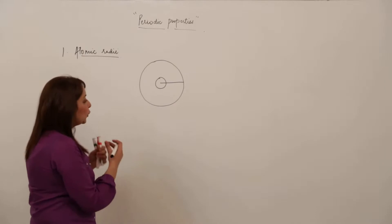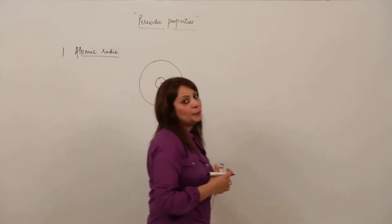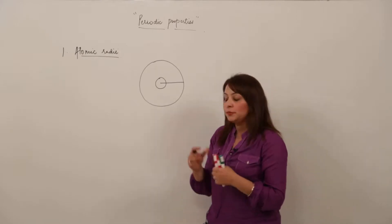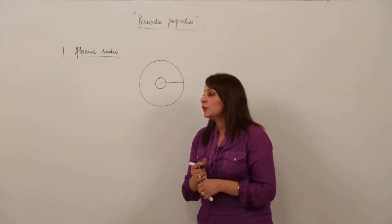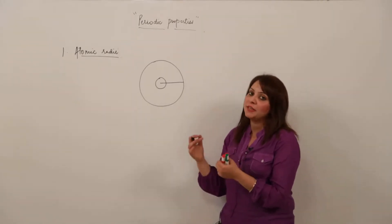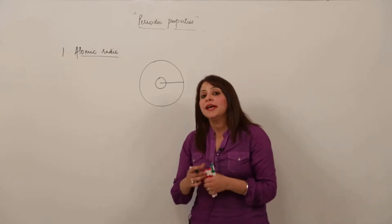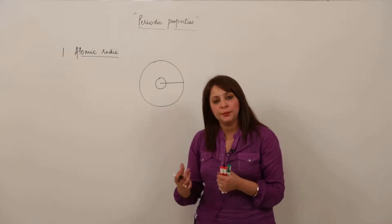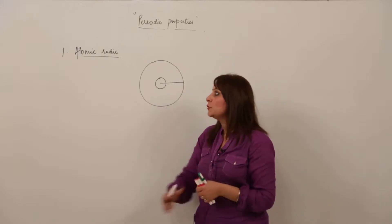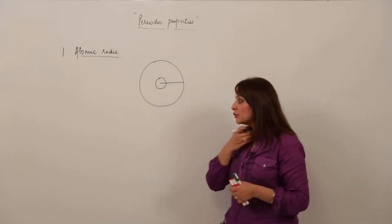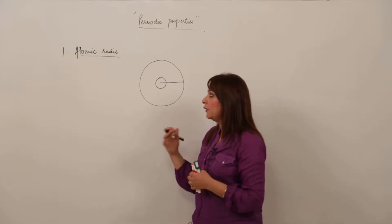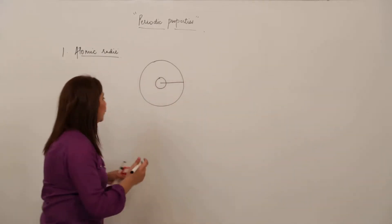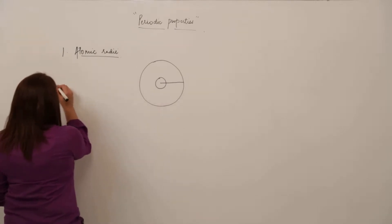How does this property vary along a group and period? As I told you when we were doing the modern periodic table, there are 18 groups and 7 periods. We need to know how properties vary along a group and how properties vary along a period. For the first property, atomic radii, for convenience I'm taking an example — let us consider the first group, that is the alkali metal group.